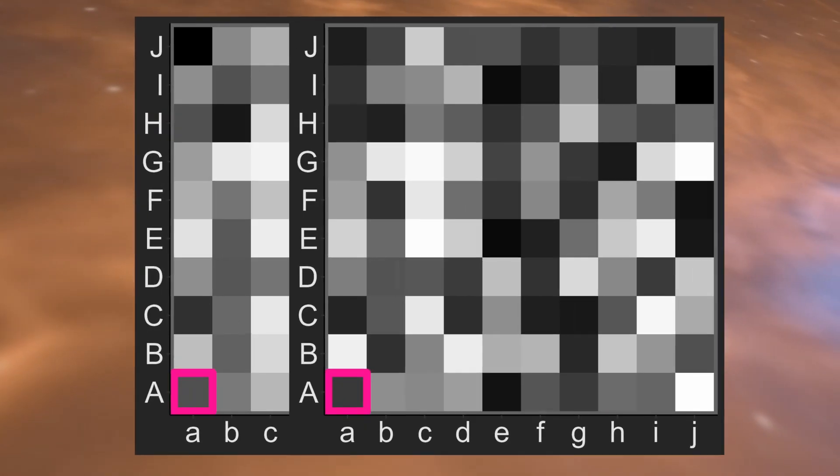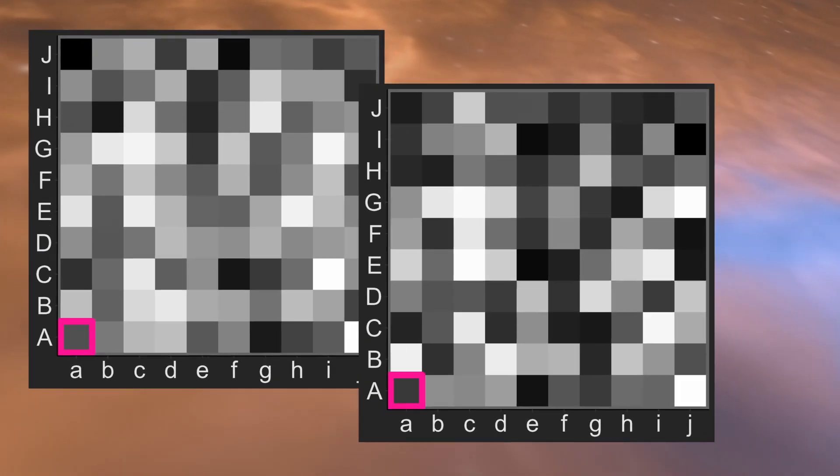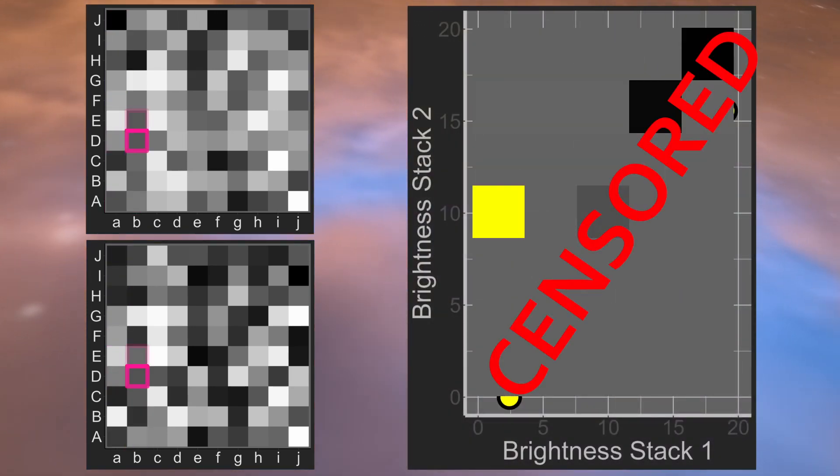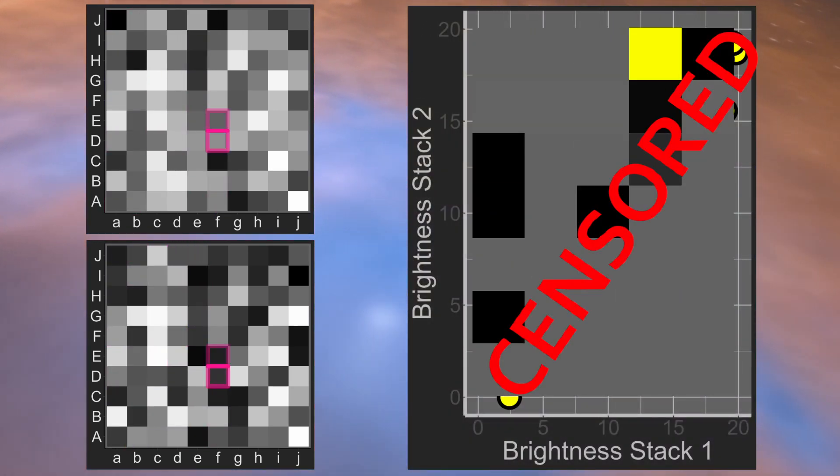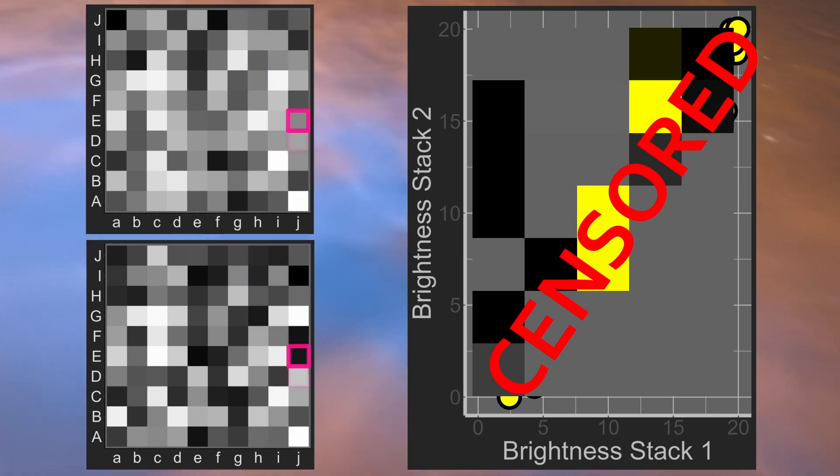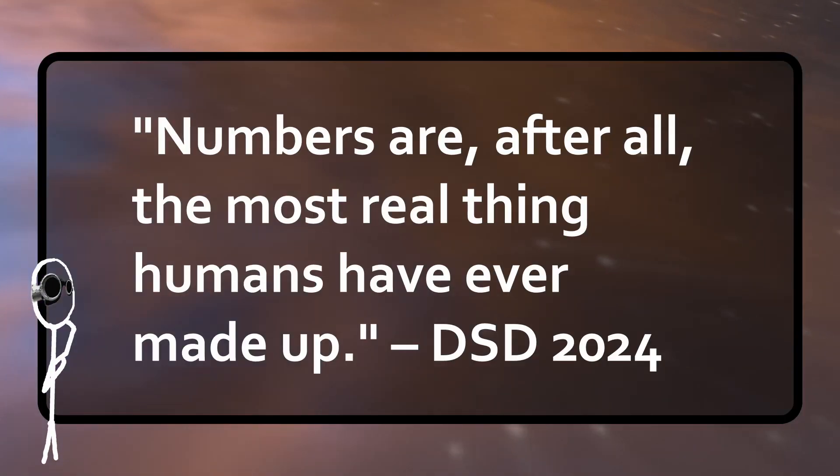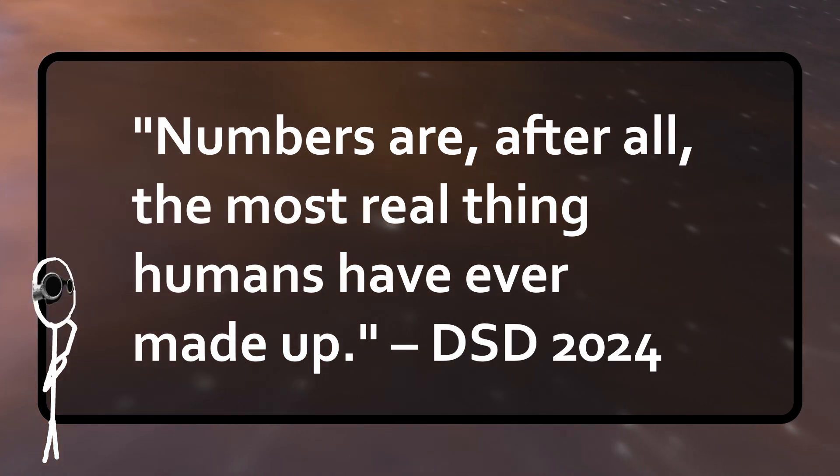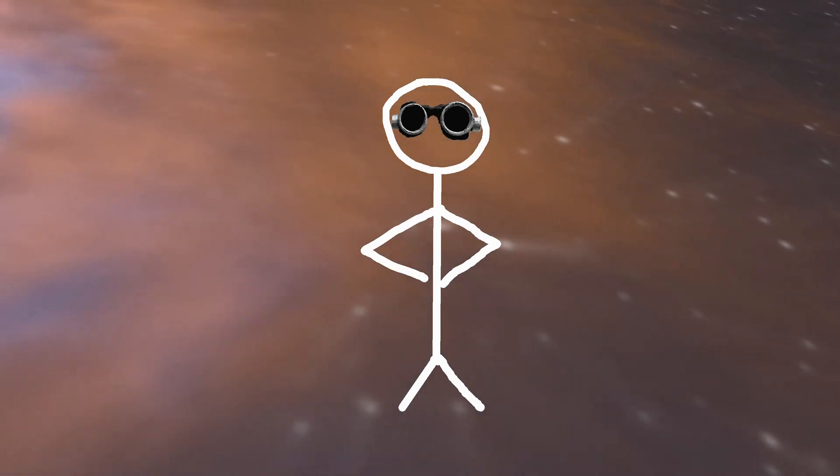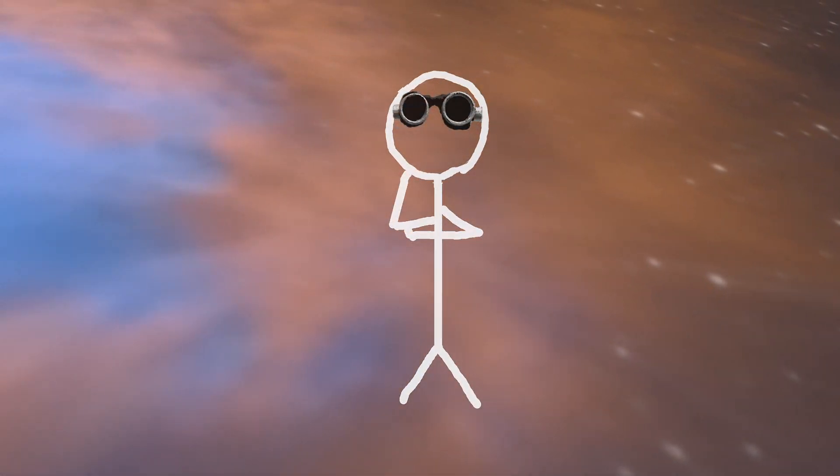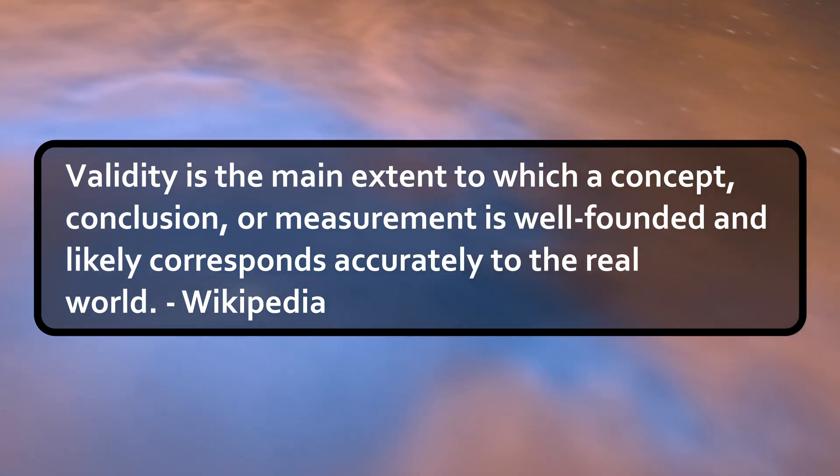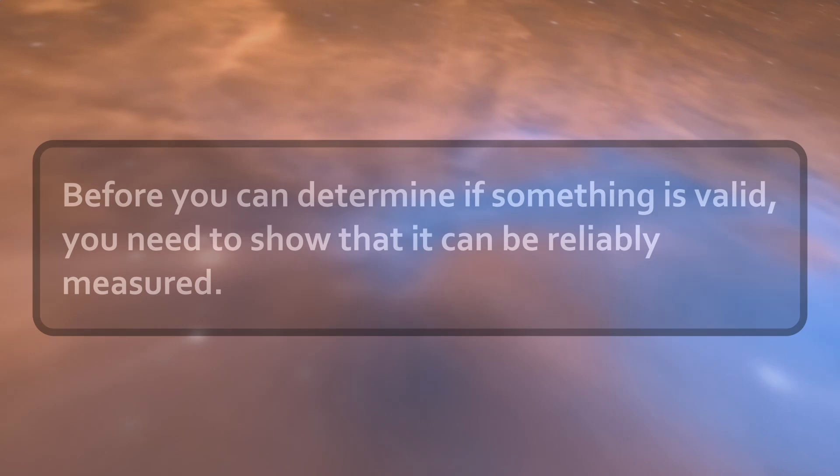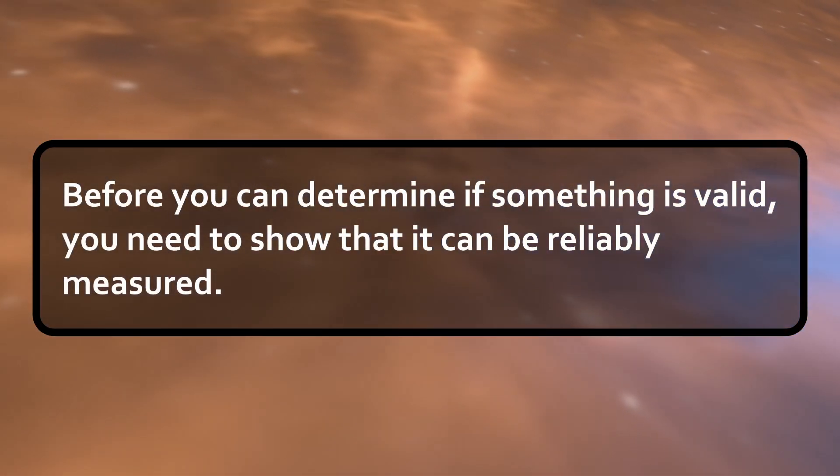By the end of this video, we'll show how good or bad the measurements of unprocessed, raw images in astrophotography really are. The results will probably surprise you. So let's look at astrophotography from a scientific-esque perspective and try to put numbers to it. Numbers are, after all, the most real thing humans have ever made up. But seriously, real is a big nebulous term. What we want to do is determine if astrophotography is scientifically valid. But before that, we need to know if our measurements are reliable. You can't show something is valid without reliable measurements.